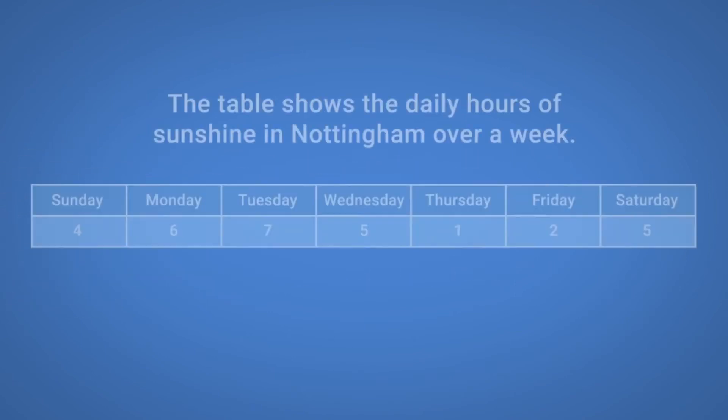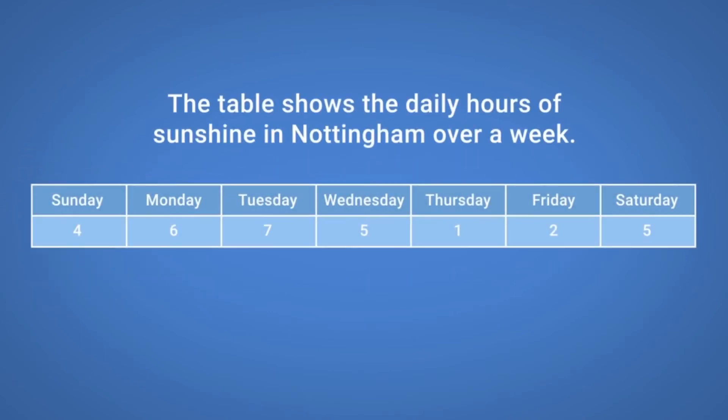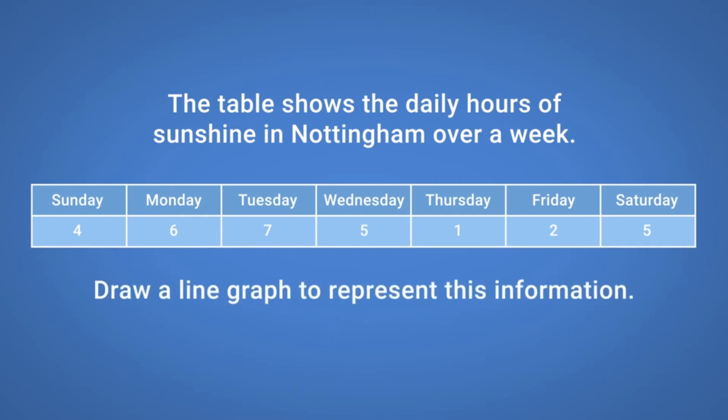Example: The table shows the daily hours of sunshine in Nottingham over a week. Draw a line graph to represent this information.